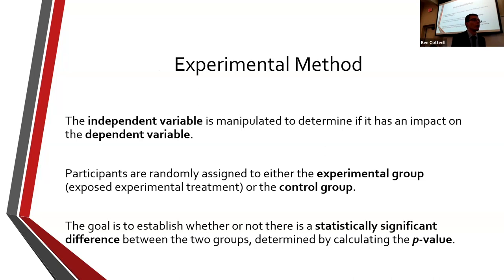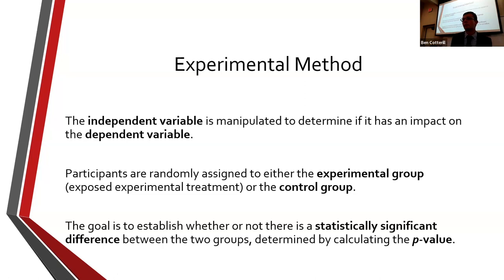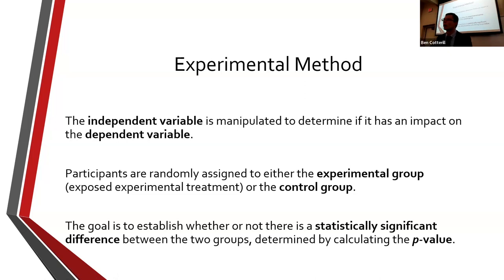In a true experiment, there are maybe two groups — an experimental group and a control group — and everything is the same except for the IV, the independent variable, which is the variable we're manipulating. For example, I want to know whether going to private school versus public school impacts intelligence. I have an experimental group of private school students and a control group of public school students. In a true experiment, everything would have to be the same, and participants must be randomly allocated to one of the conditions.